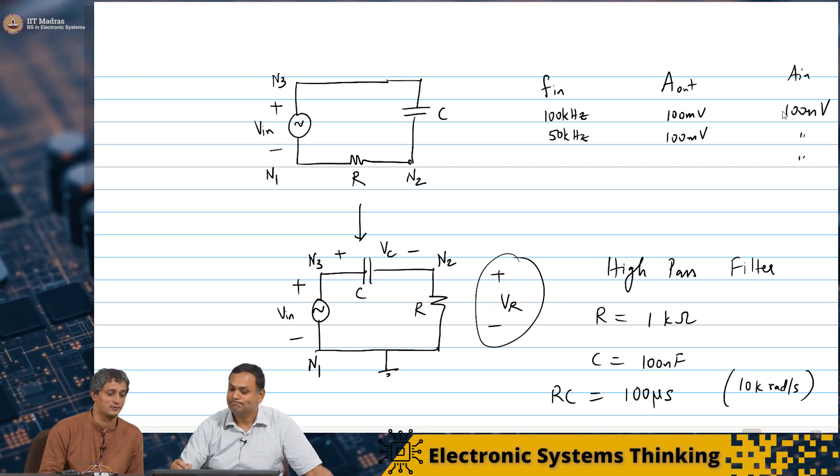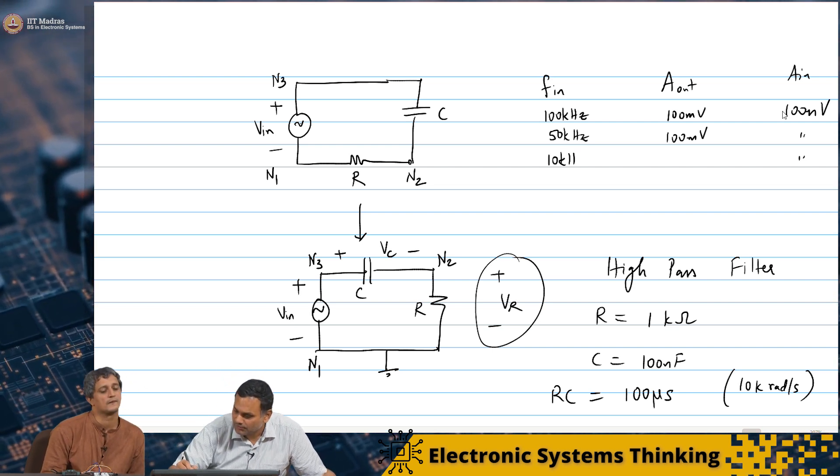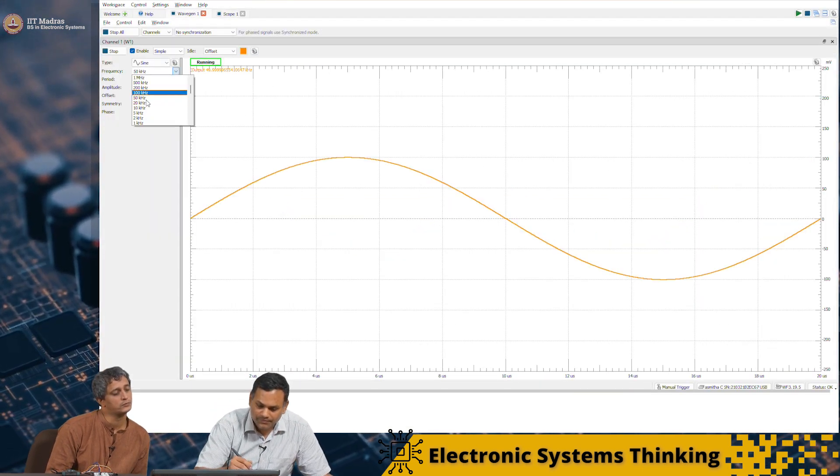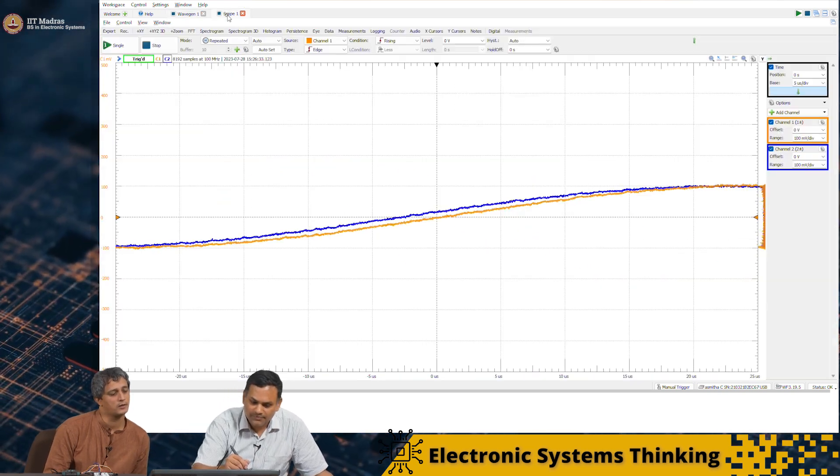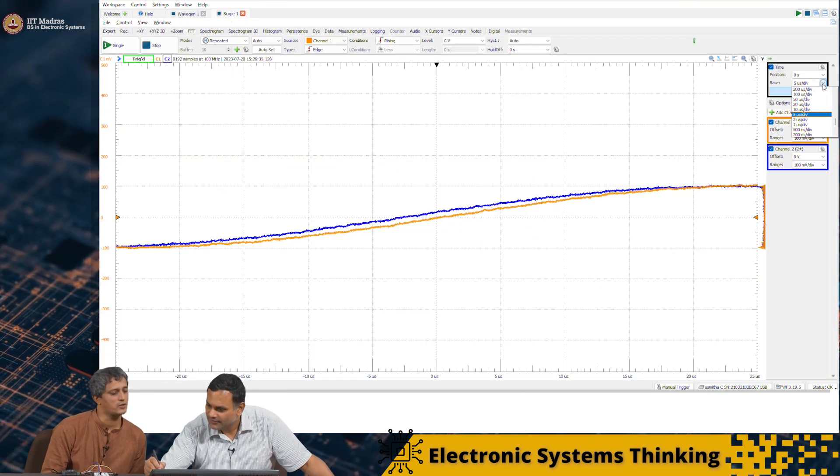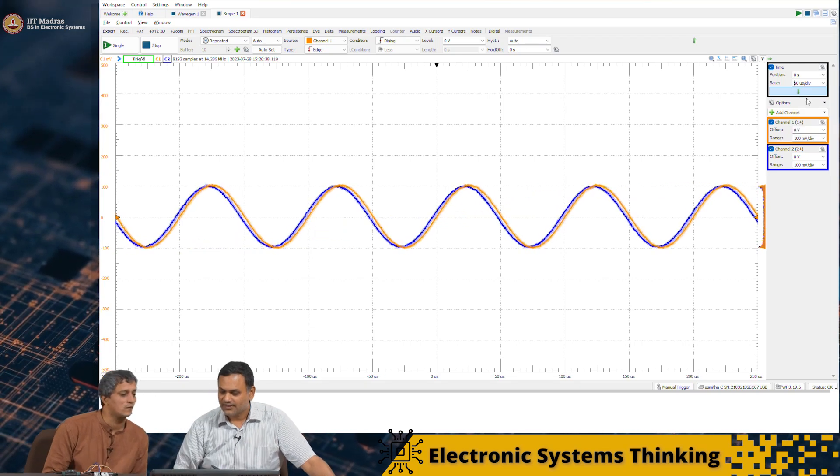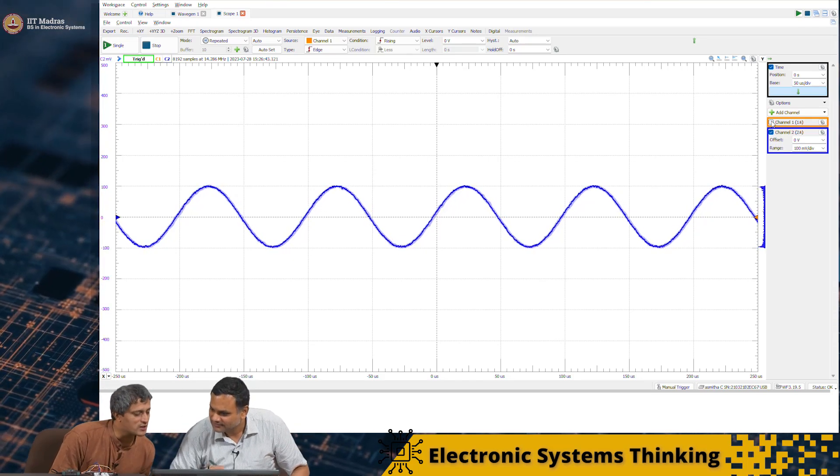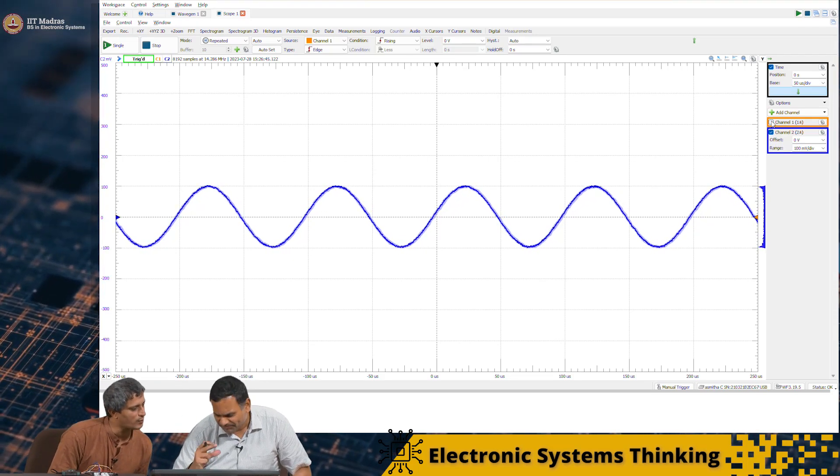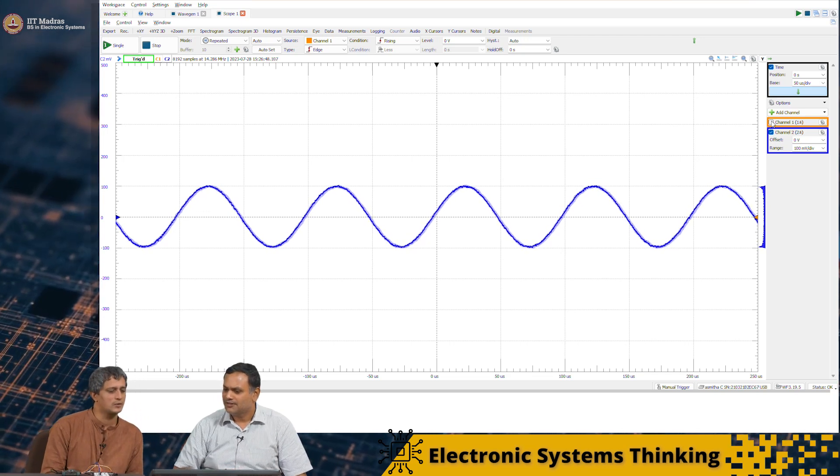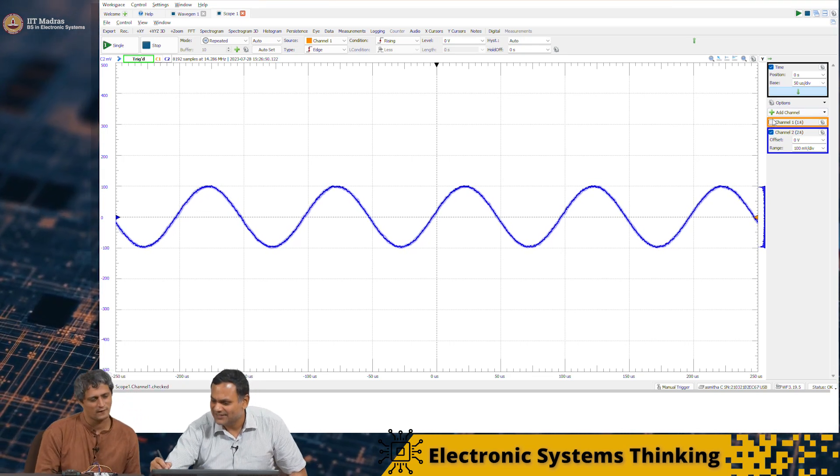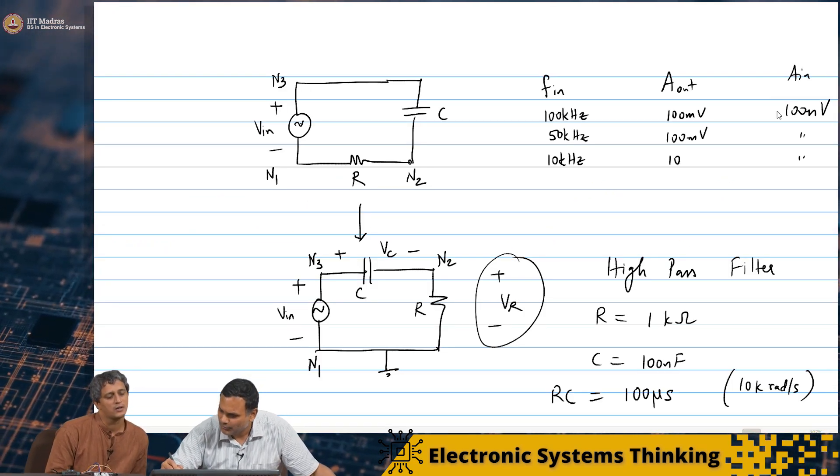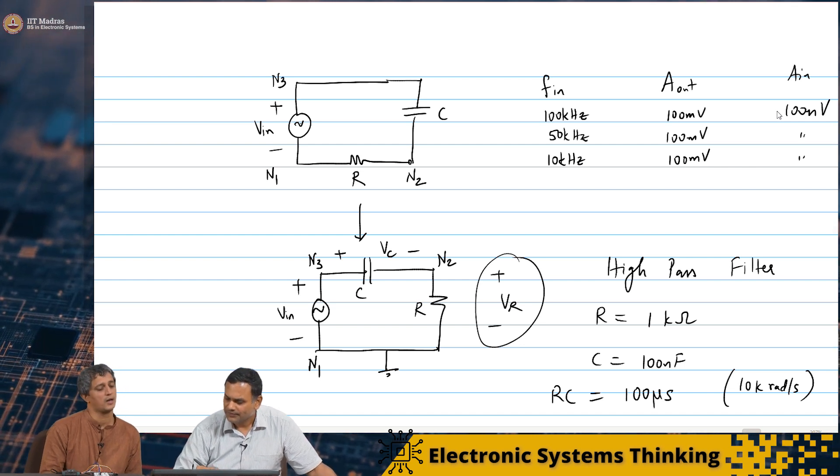Shall we go to 10 kilohertz now? You're seeing some split now. So now you can see - this still seems to be still 100 millivolts, right? Very close to 100 millivolts. But the phase is slightly off. The phase is slightly off. Let's go and just write that down. So we will say it is still about 100 millivolts.